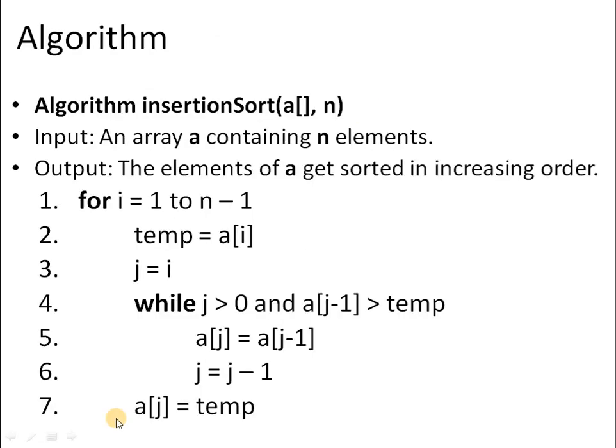Now, looking at the algorithm, we are working with n elements. So the outer loop at line 1 will have to be executed for n-1 number of times. In each iteration, we assume that elements from index position 0 to i-1 are sorted and the new element a[i] is to be inserted at its correct position.